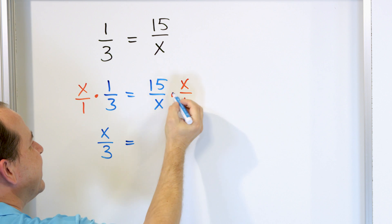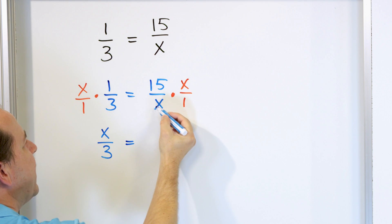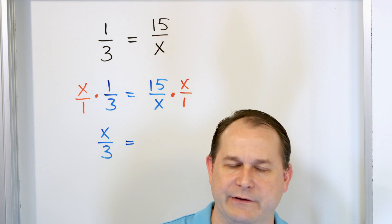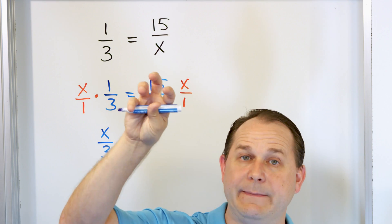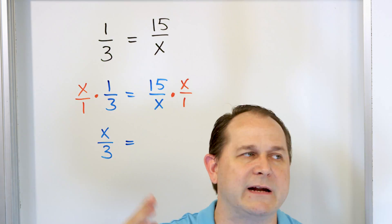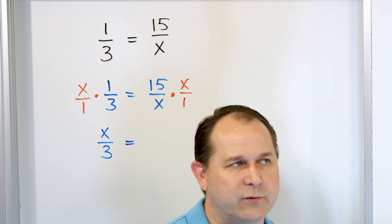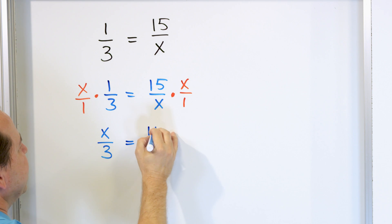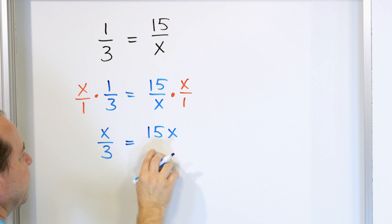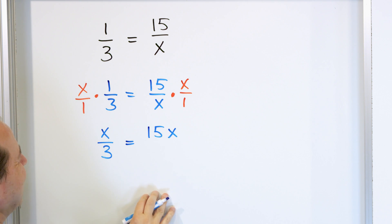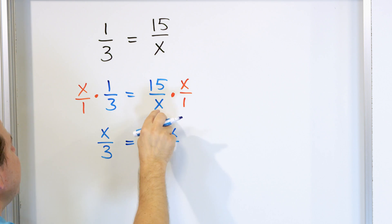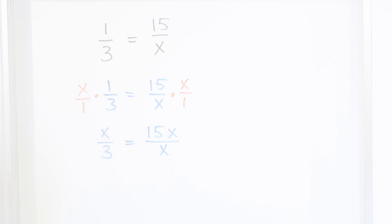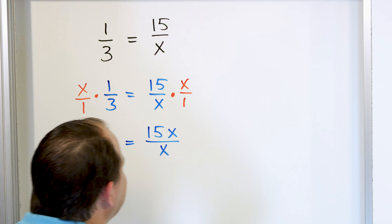On the right-hand side, notice what's going to happen. These x's — you have one on the top and one on the bottom — are going to cancel. When you multiply fractions, if you end up having the same thing on the top as on the bottom, they cancel because they divide away. So if we multiply the top, 15 times x is 15x, and x times one is x on the bottom.